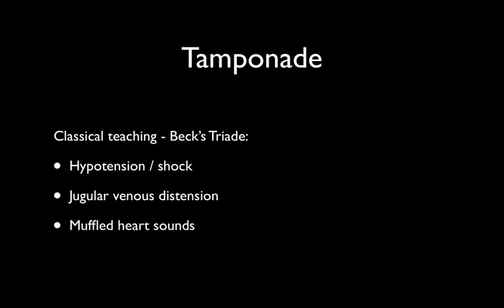Moving on to tamponade, we are classically taught to look for Beck's triad as a sign of tamponade. This triad is very specific but not very sensitive. Hypotension and shock is only present in 70% of pericardial tamponade cases. Jugular venous distension occurs in approximately 40%, and certainly in the hypovolemic patient with pericardial tamponade, jugular venous distension won't appear until their circulating volume is restored. Muffled heart sounds, while very specific, only occur in approximately 20% of cases.